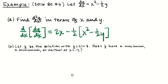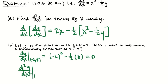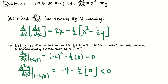The next part says: let f be the solution passing through (−2, 8). Does f have a maximum, minimum, or neither at x equals −2? We first check dy/dx at x equals −2 and y equals 8. dy/dx equals x squared minus 1/2 y, which is (−2)² minus 1/2 of 8, that's 4 minus 4 equals 0. Then the second derivative at that point is 2x minus 1/2 times dy/dx. That's 2(−2) minus 1/2 of 0, which is −4, which is less than 0. So since dy/dx is 0 and the second derivative is negative, there's a relative maximum.